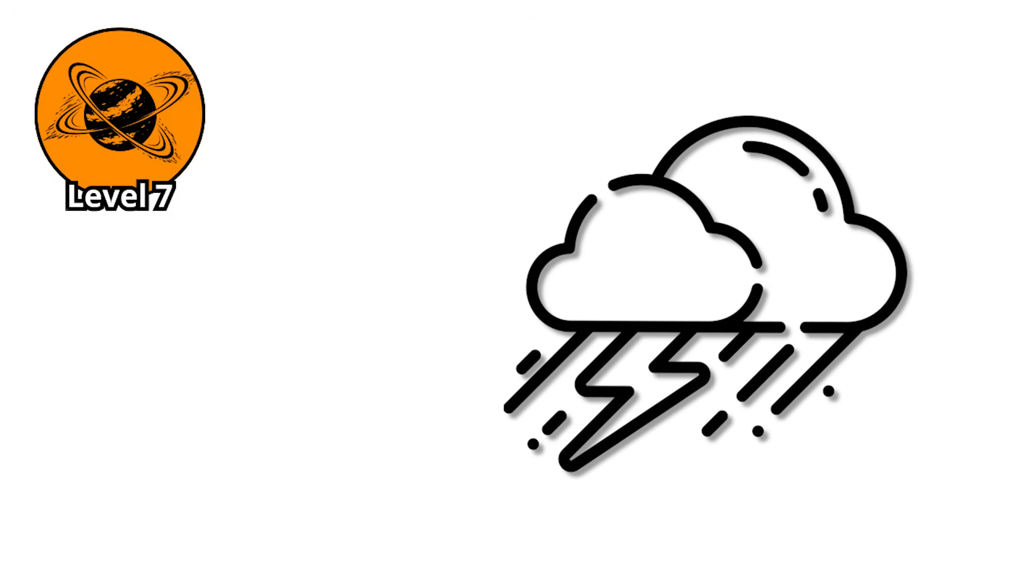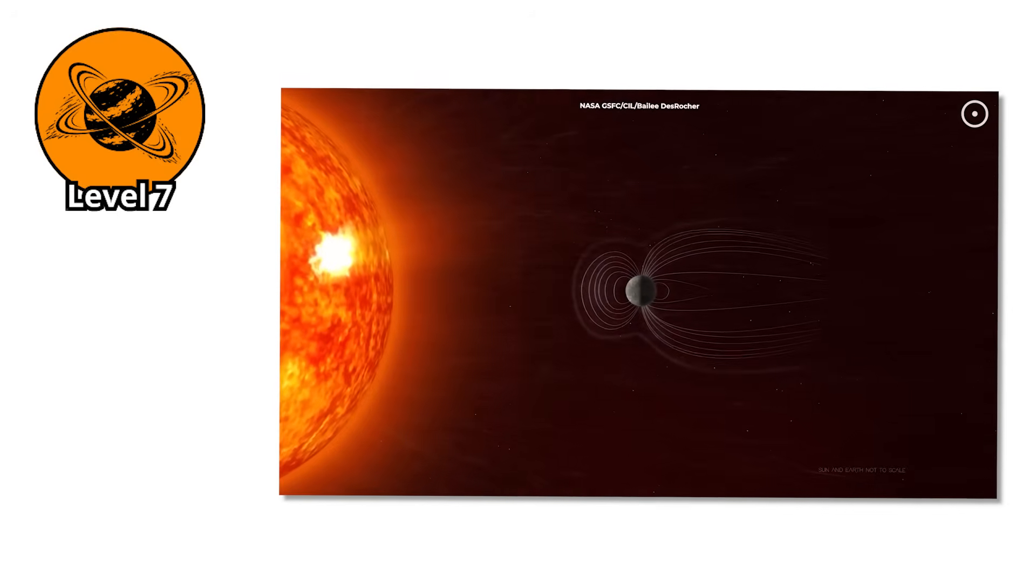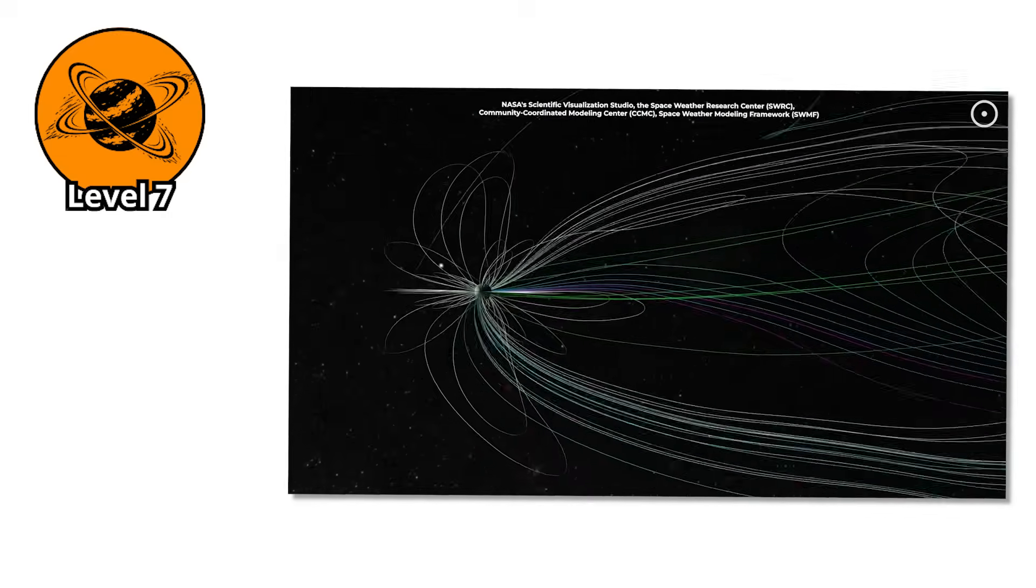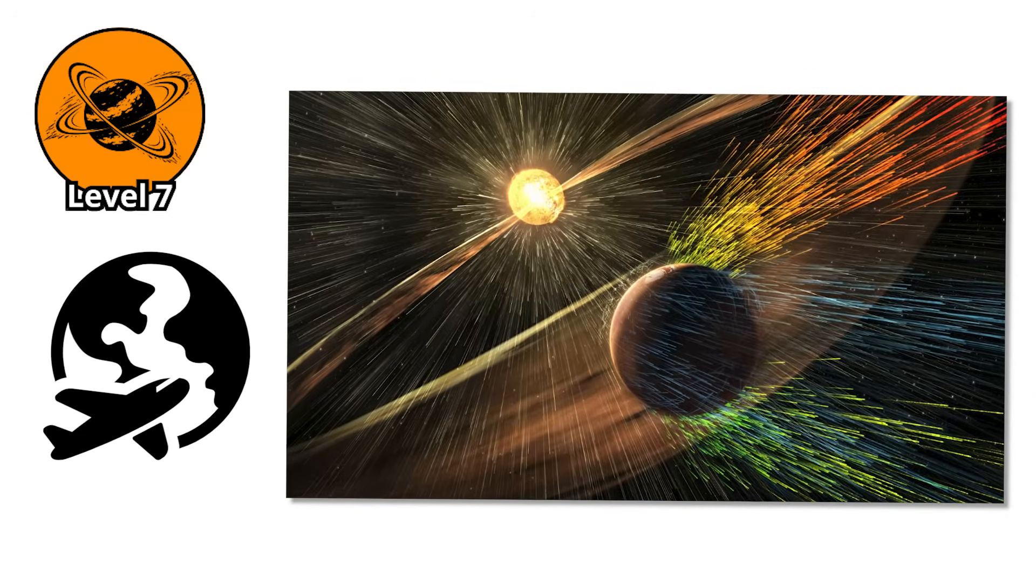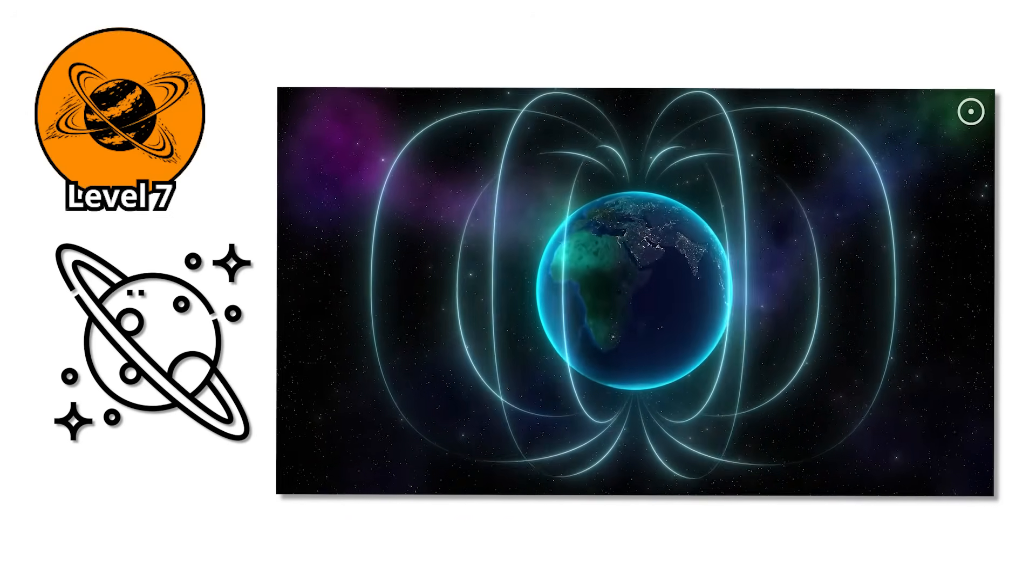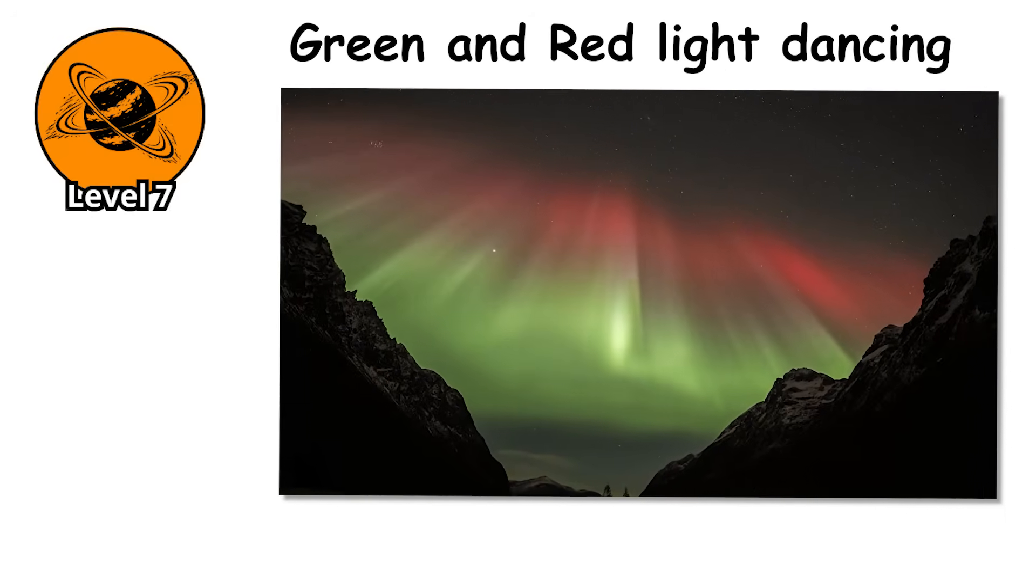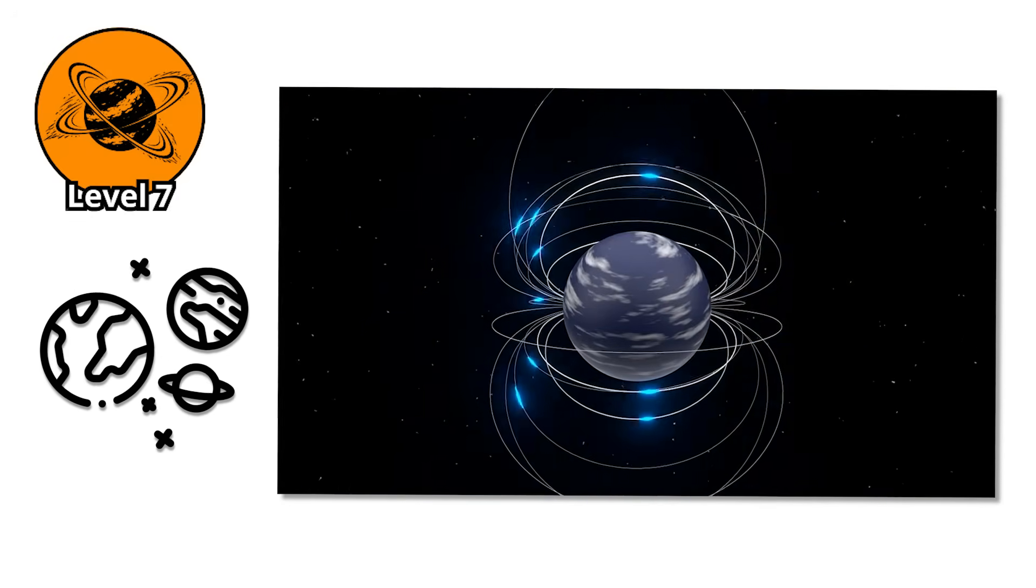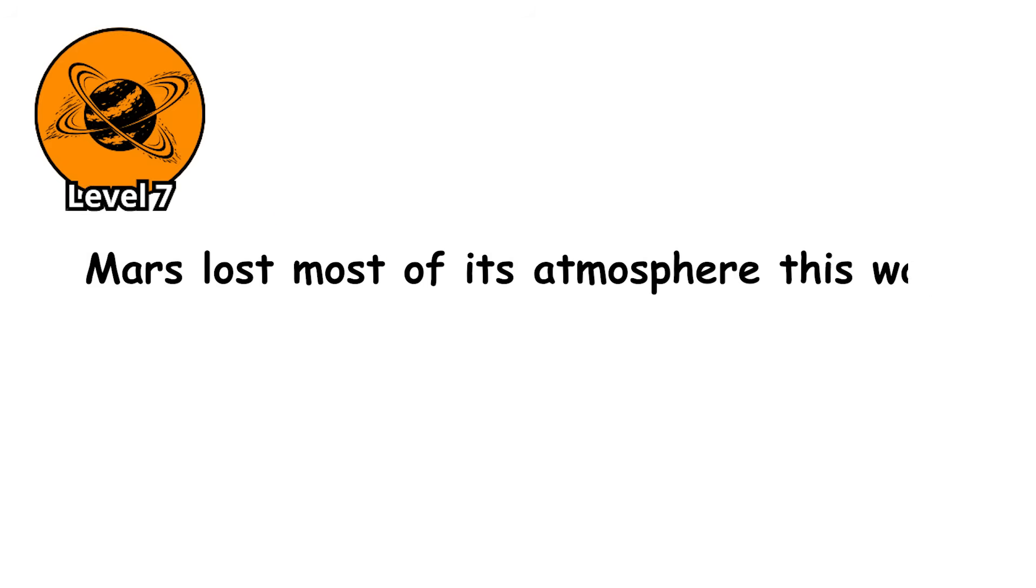Level 7. Some storms don't happen in the atmosphere. They happen to the atmosphere. When a star has a particularly violent outburst, a coronal mass ejection or a solar flare, it releases a burst of charged particles and electromagnetic radiation. These particles travel through space at millions of miles per hour, and when they hit a planet's magnetic field, they can create a magnetic storm. On Earth, we see these storms as auroras, beautiful curtains of green and red light dancing in the polar skies. But for planets without strong magnetic fields, magnetic storms are catastrophic. Mars lost most of its atmosphere this way.